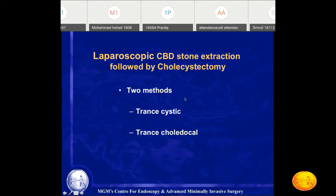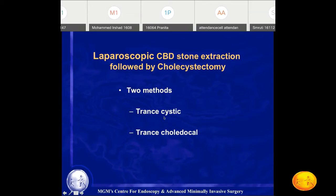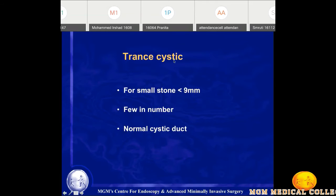For laparoscopic CBD stone extraction followed by cholecystectomy, there are two approaches: trans-cystic and trans-choledochal. The trans-cystic approach requires the stone to be less than 9mm in diameter and the cystic duct to be patent — you pass a basket through the cystic duct into the CBD, grasp the stone, and extract it through the cystic duct. However, nowadays for stones that small, ERCP followed by cholecystectomy is more commonly preferred. The trans-cystic indication is stone less than 9mm, few in number, with a normal patent cystic duct.